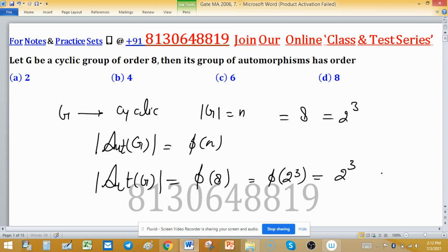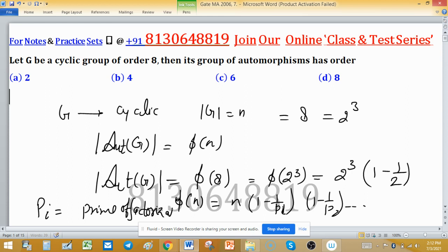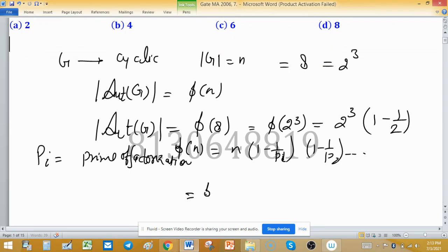So value of this one will be 2 raised to the power 3, 1 minus 1 upon 2. Actually the formula is Phi n can be easily found out with the help of n and within bracket 1 minus 1 upon P1, 1 minus 1 upon P2, and so on, where P's are primes of prime factorization.